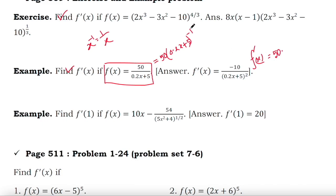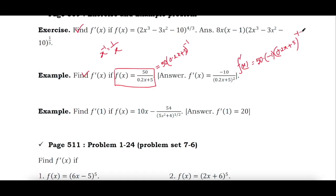The negative 1 power becomes the coefficient. (0.2x + 5) to the power (−1 − 1) is the result of applying the rule. But now you need to again differentiate the inner function 0.2x + 5. This equals −50 × (0.2x + 5)^(−2) × the derivative of 0.2x, which is 0.2.